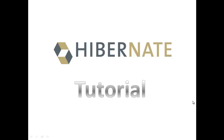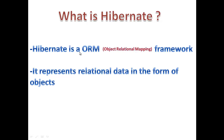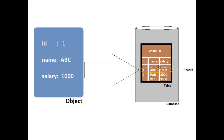Hi, welcome to our Hibernate tutorial. What is Hibernate? Hibernate is an ORM framework. ORM means Object Relational Mapping, which represents relational data in the form of objects. We have a table 'worker' in the database with columns ID, name, and salary. We are representing this table data in the form of an object — an object holds a record of a database table. A record is nothing but a row in a table, and a row contains all column values.